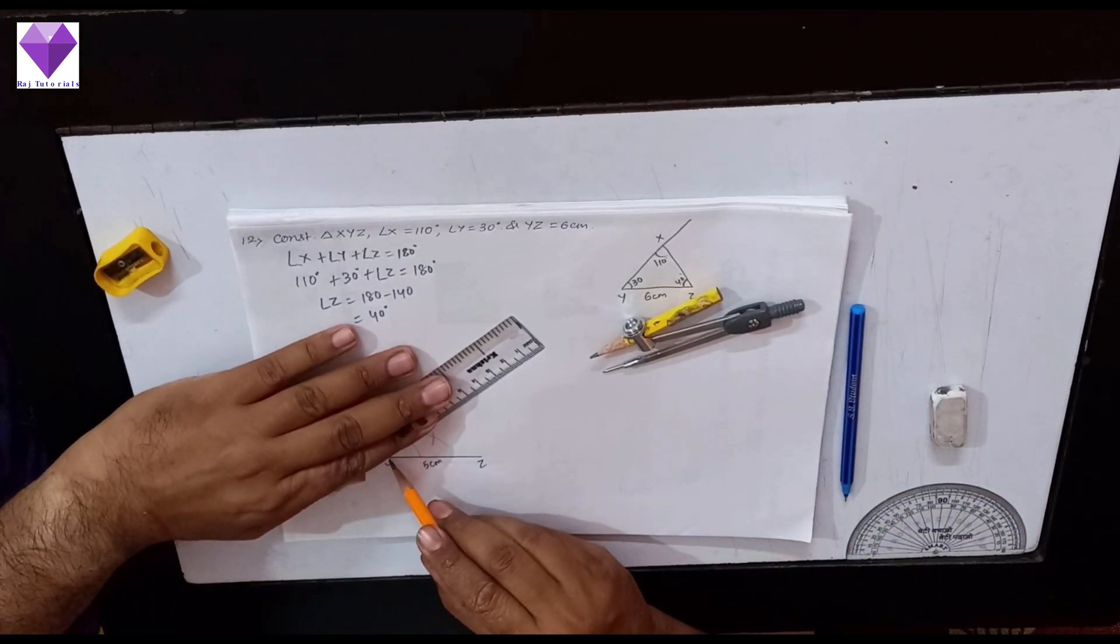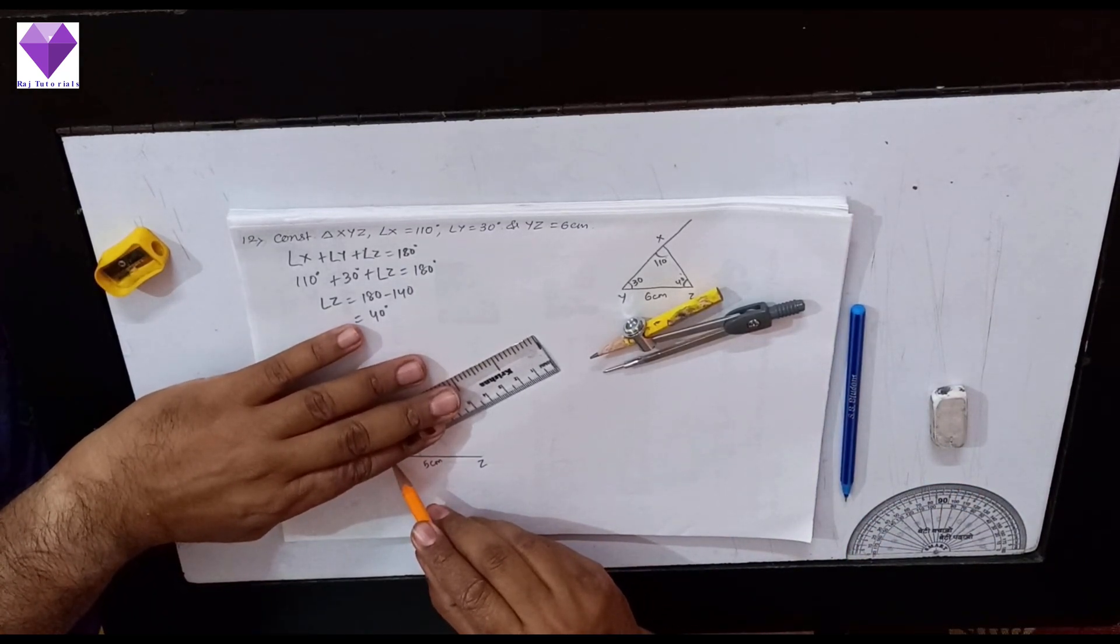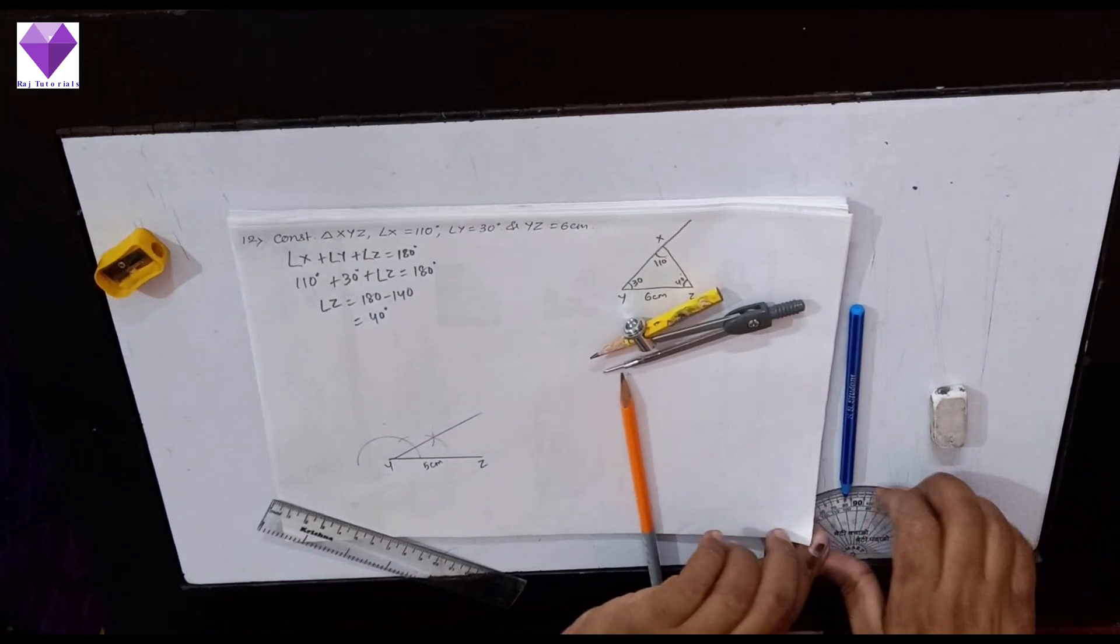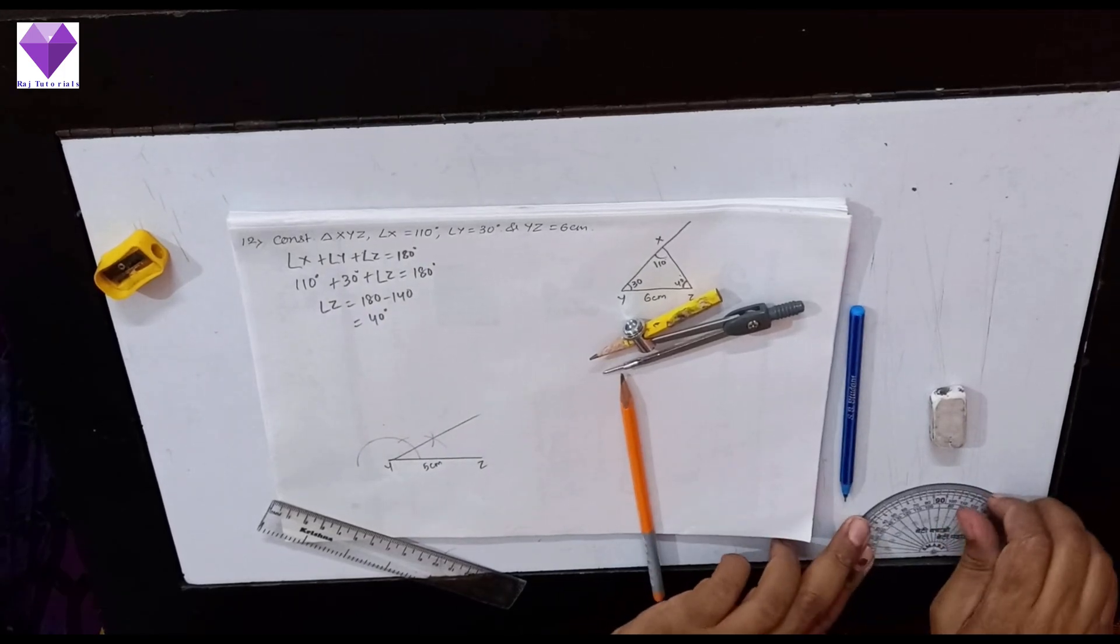Now I will elongate that. I will join and elongate that, and here I will be drawing a 40 degree angle with my protractor.